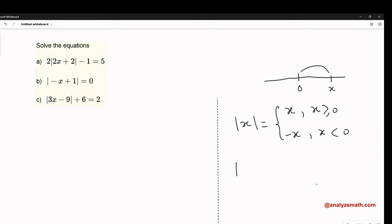Quick numerical examples: the absolute value of 2. Since x equals 2 is positive, we use the first definition, so it equals 2. The absolute value of negative 5. Since x is negative, we use the second definition. We multiply by minus, so minus negative 5 gives us 5.